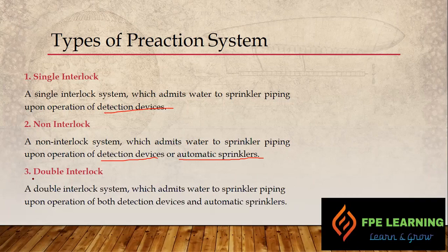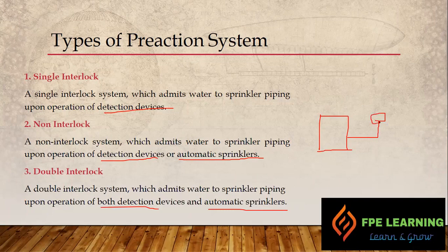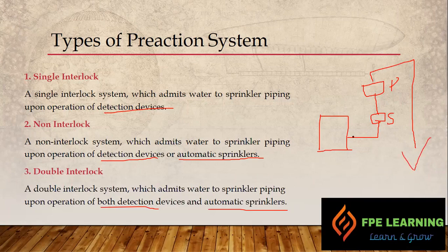In the double interlock system, water is admitted to the sprinkler piping upon operation of both the detection device and the automatic sprinkler. There is a deluge valve with a priming chamber connected by a solenoid valve and a pneumatic actuator — both need to be activated in order to release water to the drain connection. If only one of them activates, the system will automatically go to reset condition.